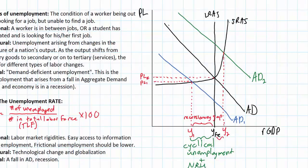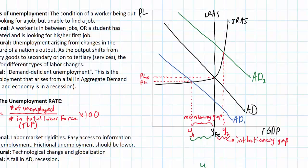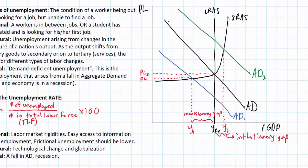That's the difference between Y2 which is an output level beyond the full employment level and YFE. So we can call this an inflationary gap. And what happens to the unemployment rate? Well because at full employment we have the natural rate and now we have something less than the natural rate we can say that the unemployment rate is less than the natural rate of unemployment.